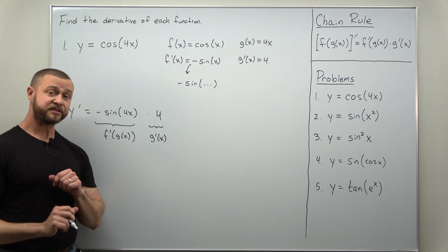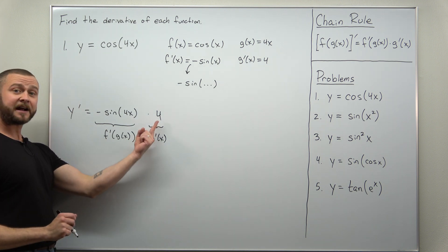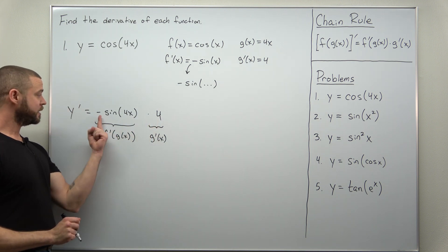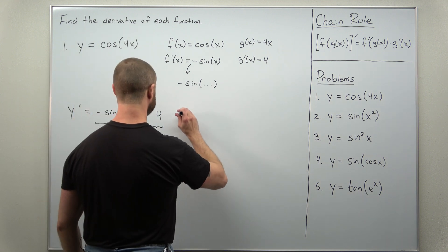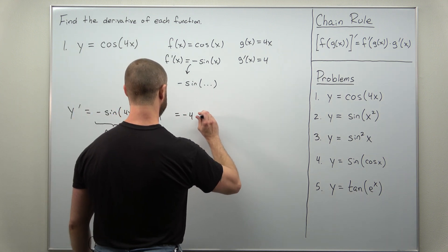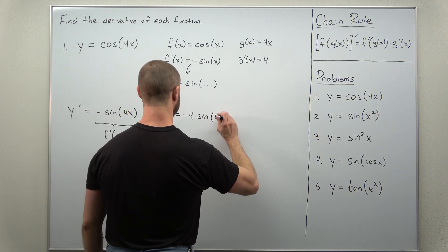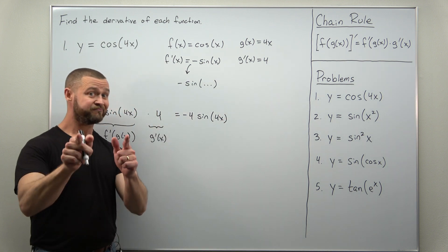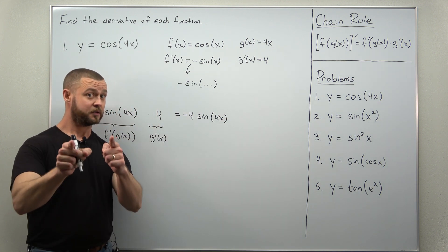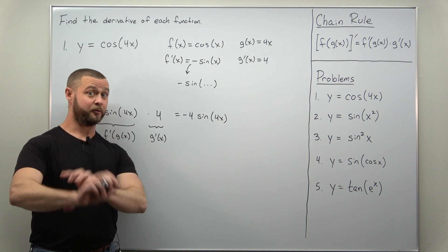And that's it. We can rewrite this by taking the factor of 4, moving it in front, and writing this as negative 4 times sine of 4x. If you're ready, let's get to problem 2.